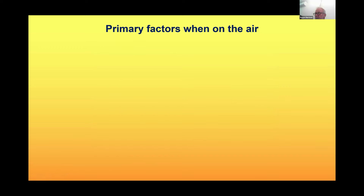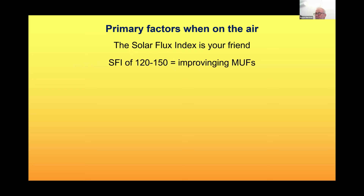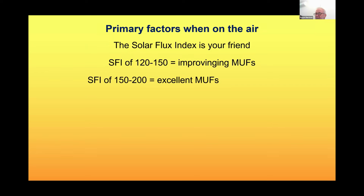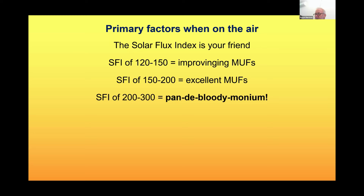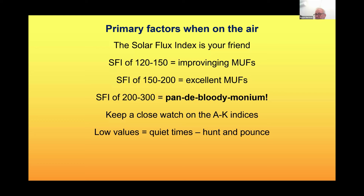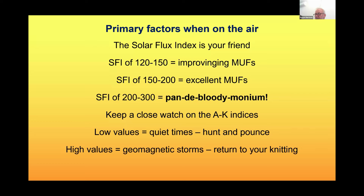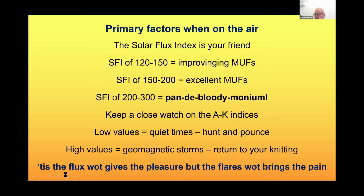Primary factors when on the air: the solar flux index is your friend. SFI of 120 to 150 — improving most conditions. SFI of 150 to 200 — excellent MUFs. SFI of 200 to 300 — pandemonium! Keep a close watch on the A and K indices. Low values mean quiet times, so you can hunt and pounce. High values mean geomagnetic storms — return to your knitting. To paraphrase an old musical ditty: it is the flux what gives the pleasure, but the flares what brings the pain.